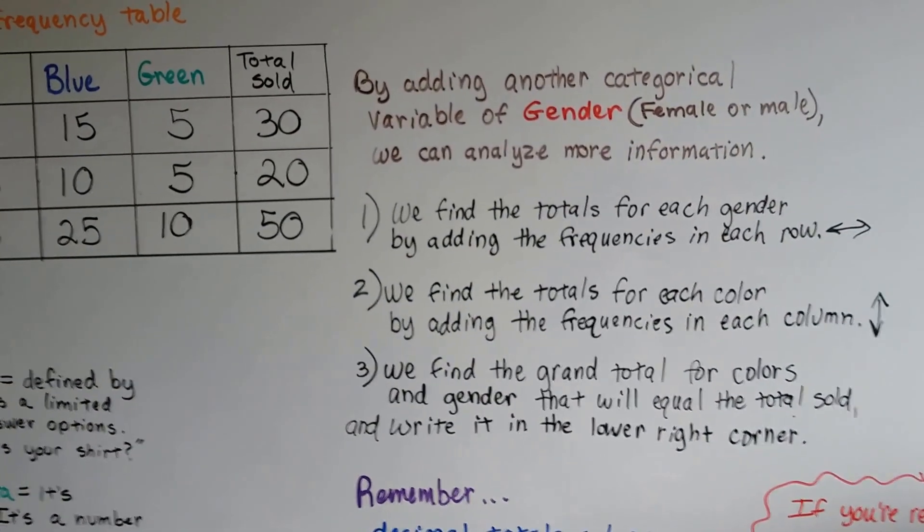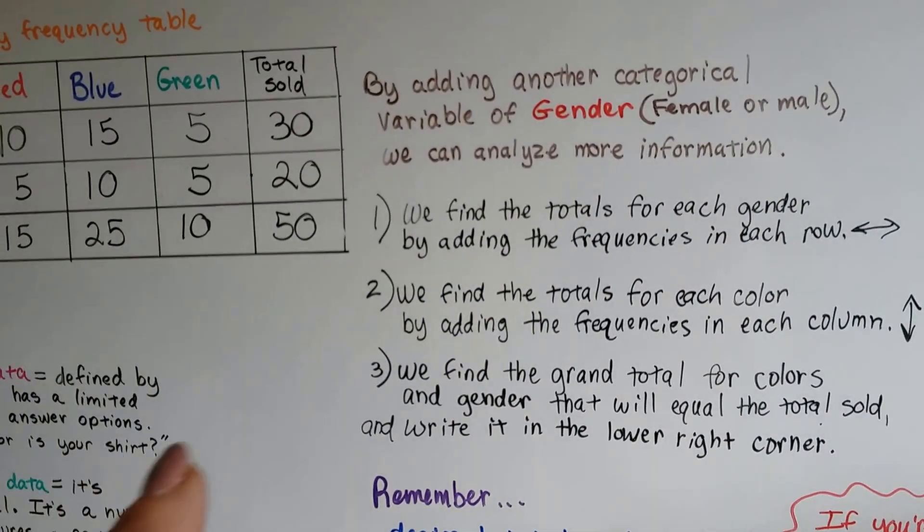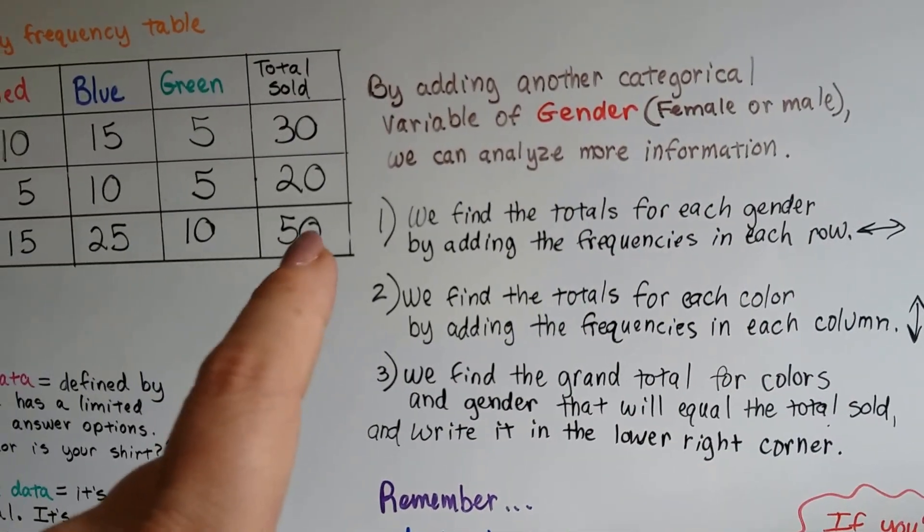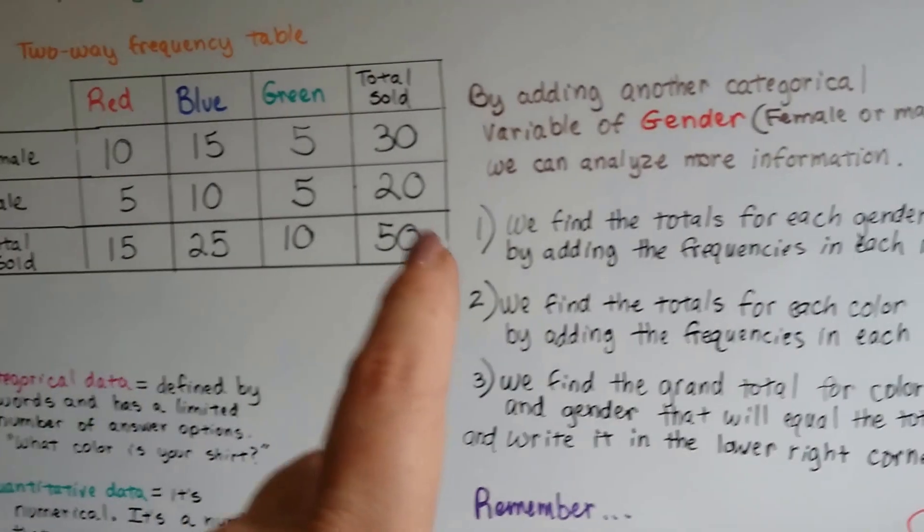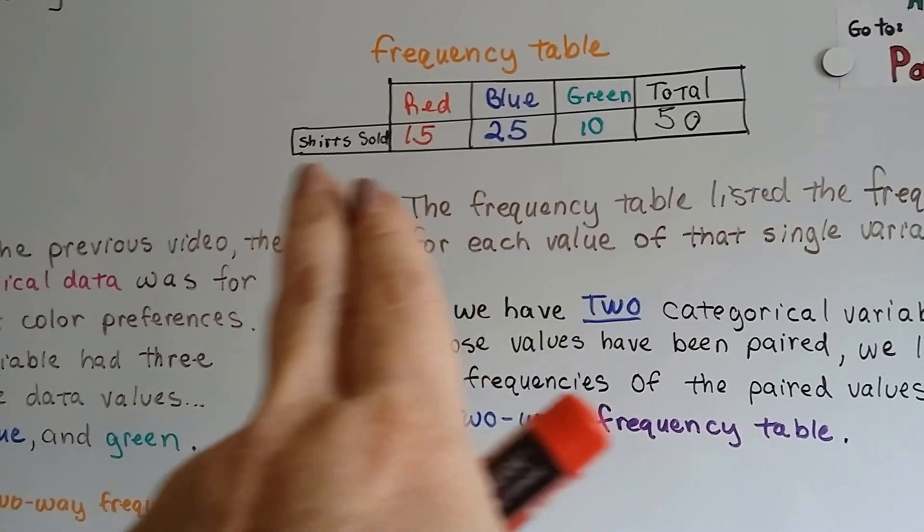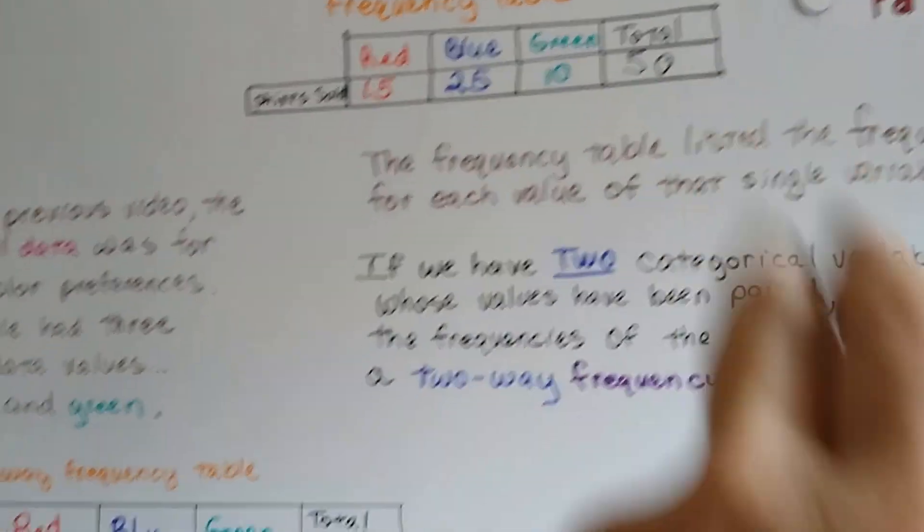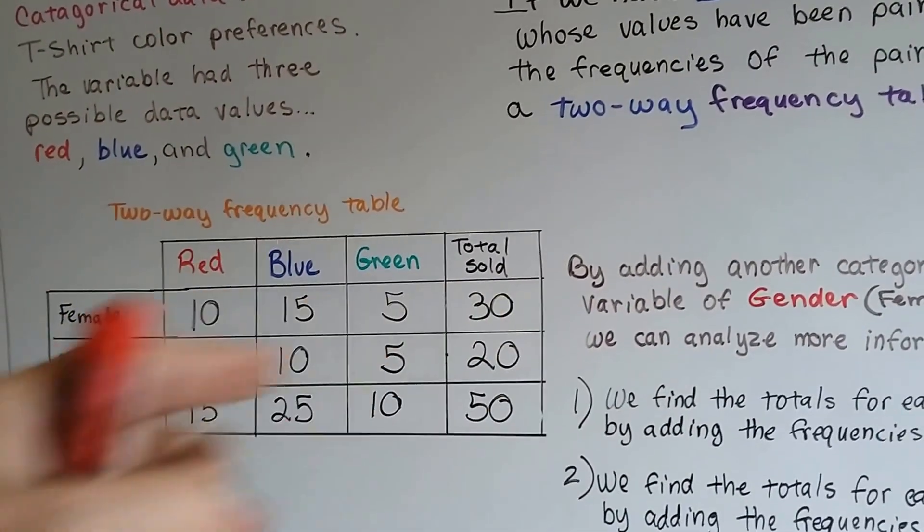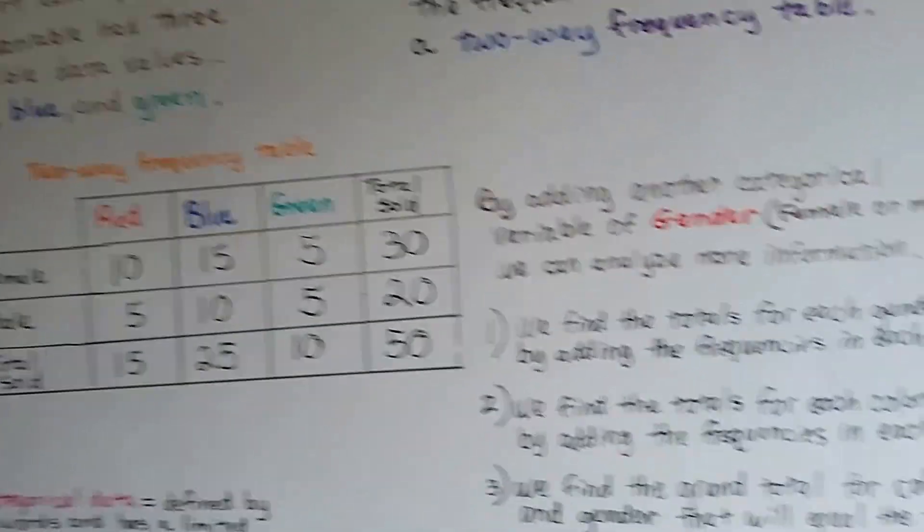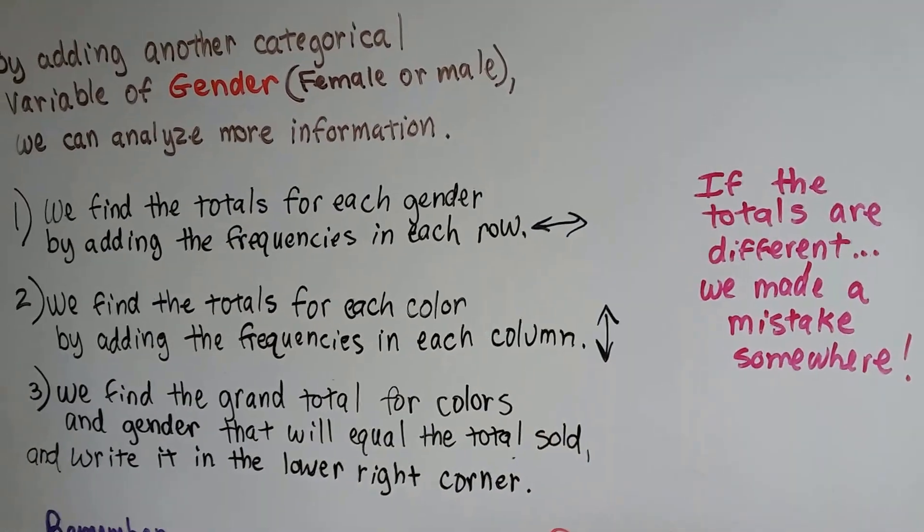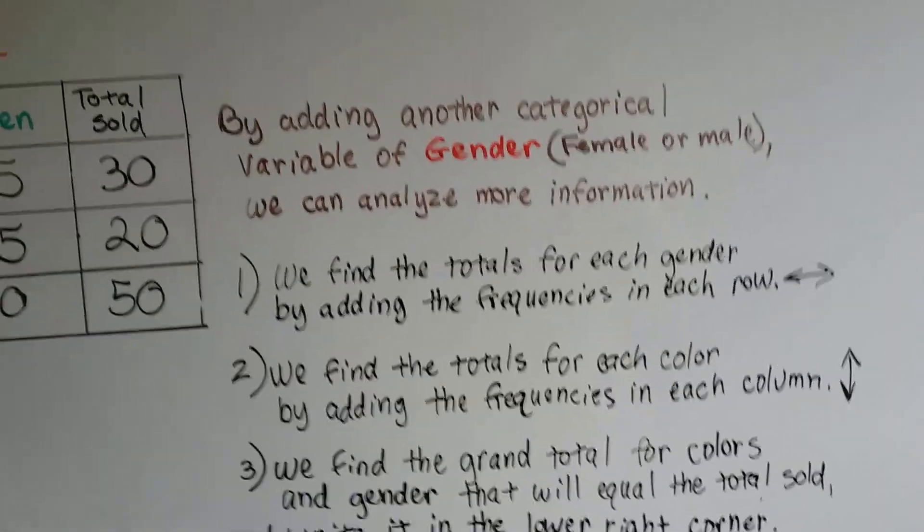We find that grand total for the colors and the gender that will equal the total sold. And we write it in this lower right-hand corner, down here in this bottom corner. So you notice how this one had one line because it had one category. This one's got two coming across this way with a total. And if the totals are different between color and gender, then we know we made a mistake somewhere. We have to go back and fix it.